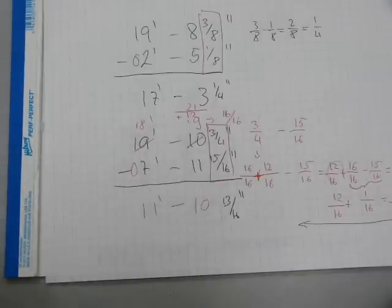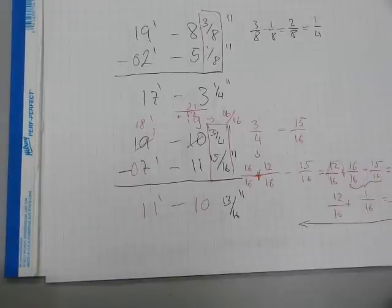You cannot do it on a calculator, on a usual scientific calculator. You need a special construction calculator that has a circuitry to do this kind of stuff. Or you can do it in paper just like this. It takes a little longer, but you can get away without an expensive gizmo. So this is how subtraction, feet and inches, is done with borrowing.